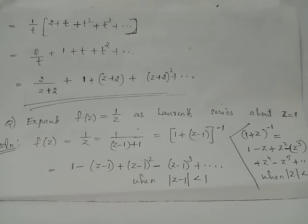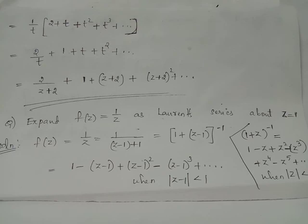Resubstituting t equals z plus 2, the Laurent series expansion in powers of z plus 2 is: f of z equals 2 over (z plus 2) plus 1 plus (z plus 2) plus (z plus 2) squared plus etc. This is the required Laurent series expansion about the point z equals minus 2.